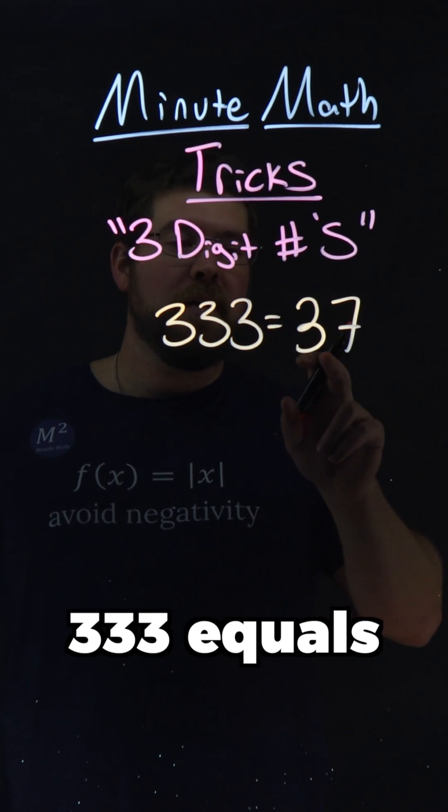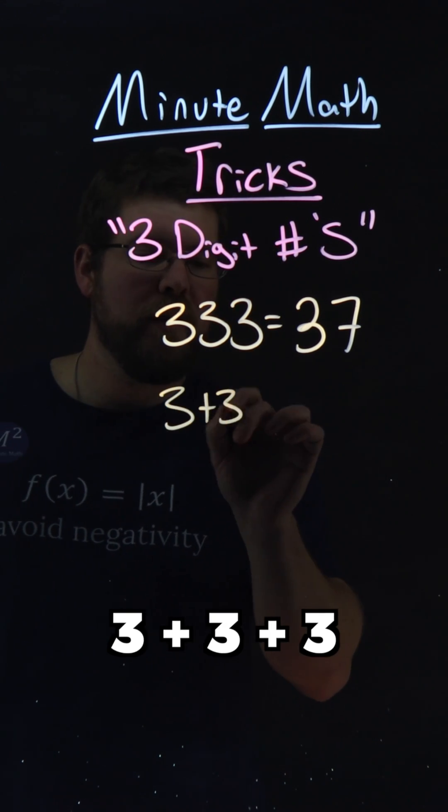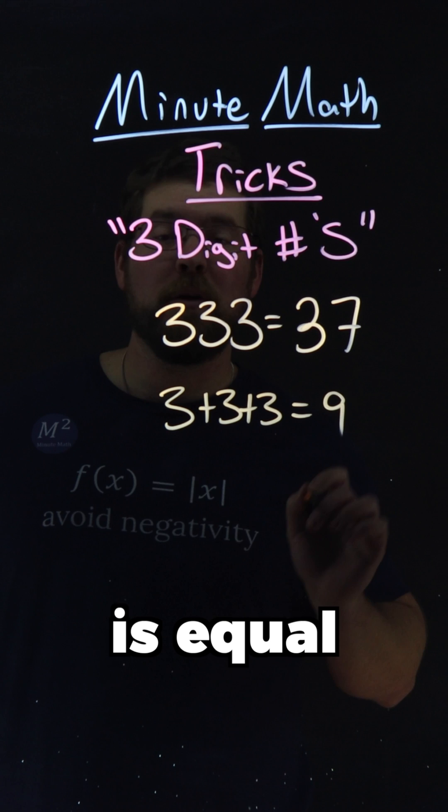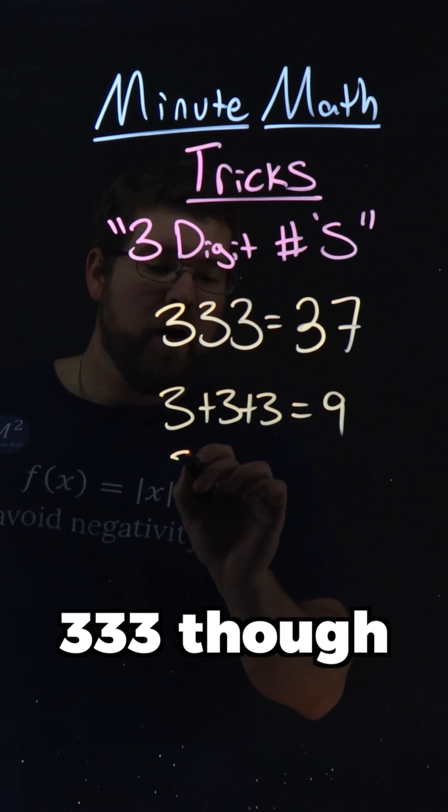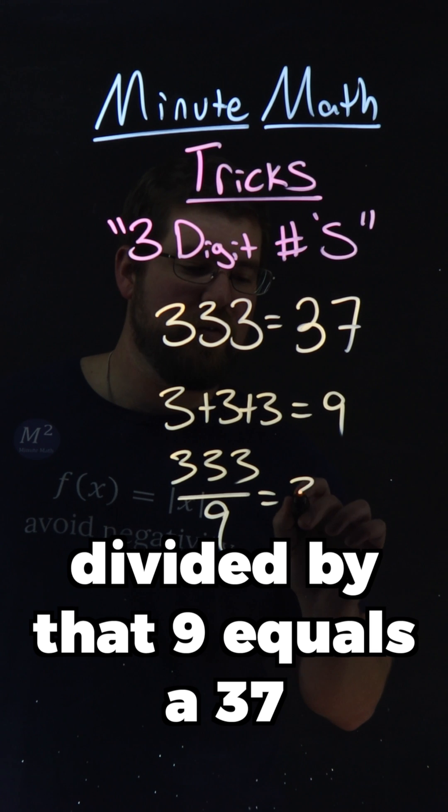333 equals 37. Let's add the 3s. 3 plus 3 plus 3 is equal to 9. 333 divided by that 9 equals 37.